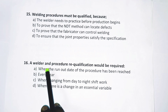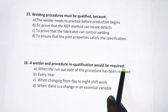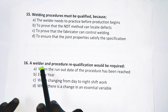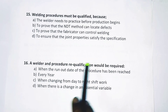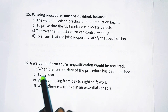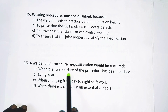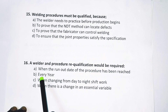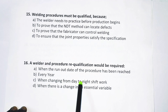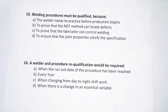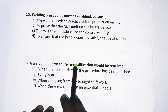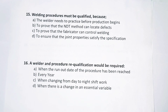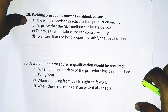Question number 16: A welder and procedure re-qualification would be required when there is a change in an essential variable. This question asks about both welder qualification and WPS qualification. Re-qualifications are needed whenever there is a change in the essential variable in both cases — for the welder and for the welding procedure.